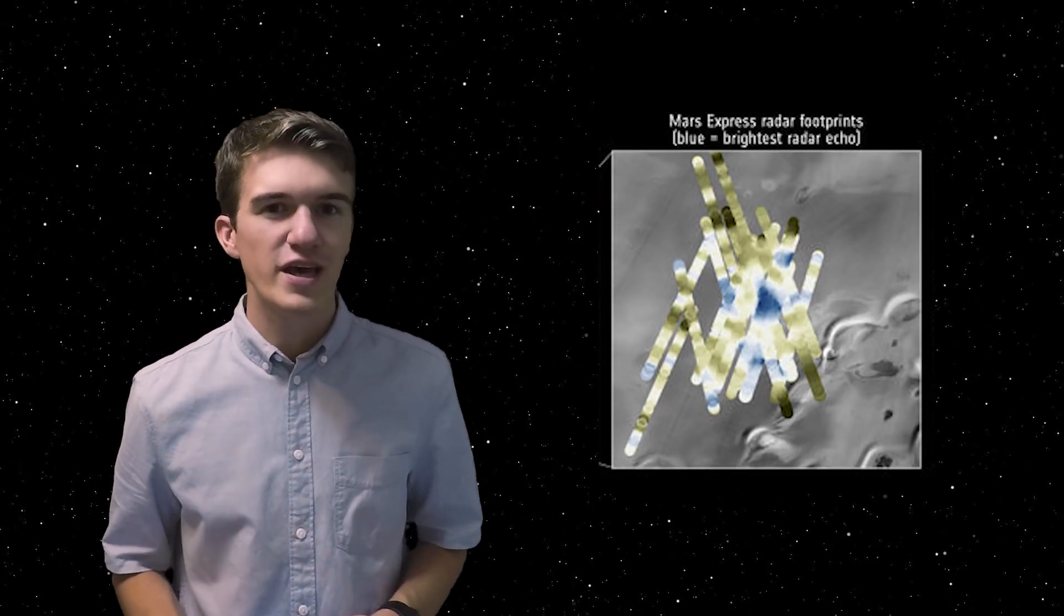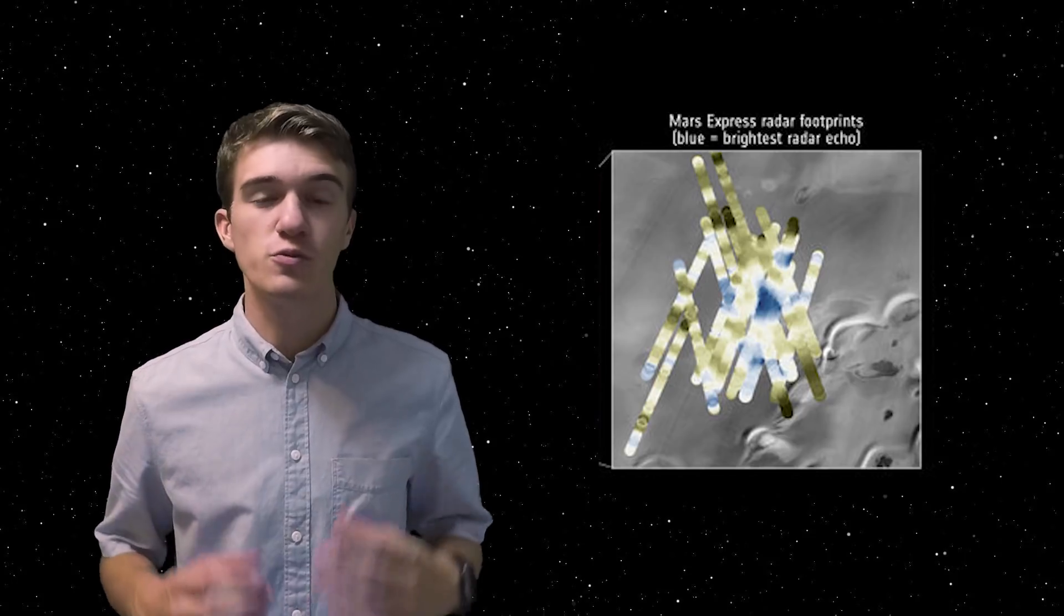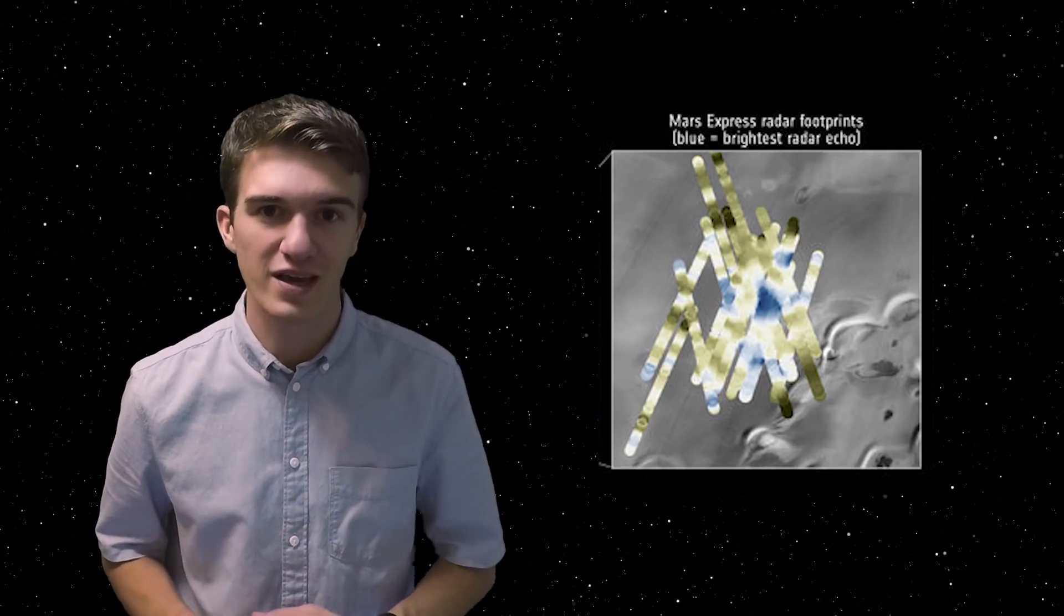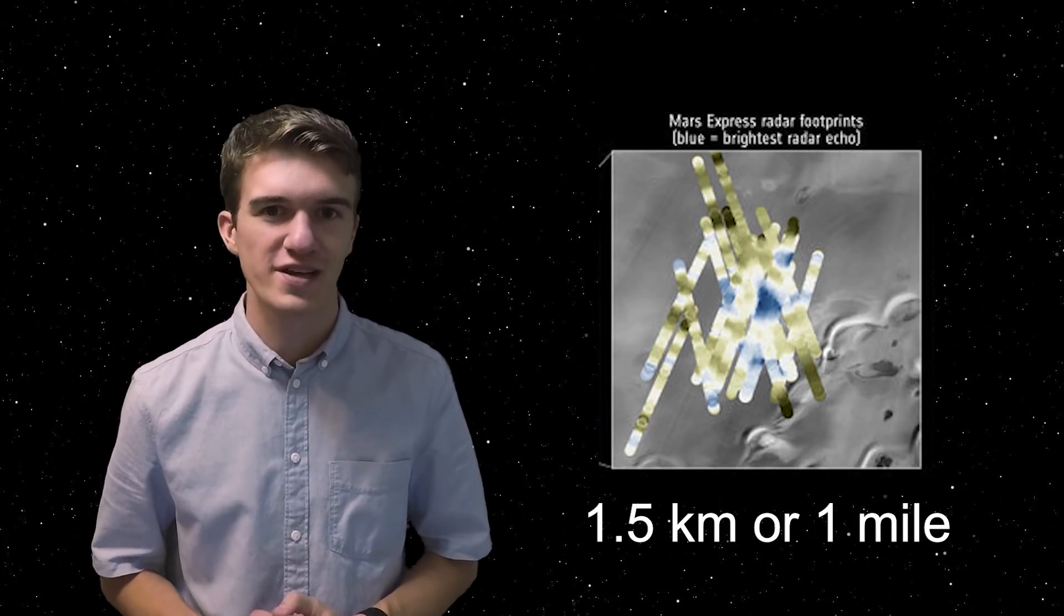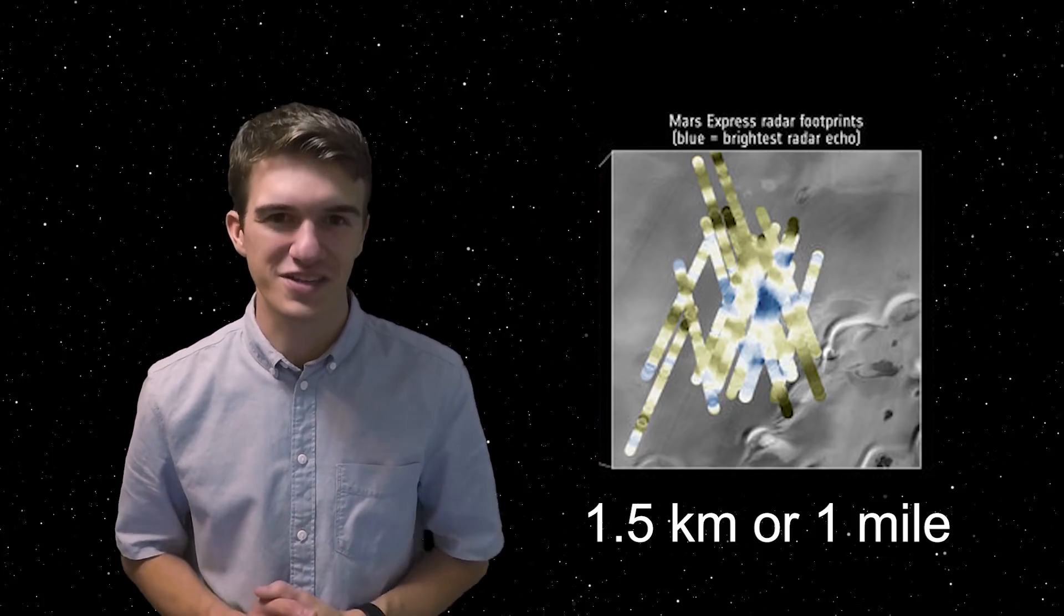This is just one image that was taken over a single orbit over that region. And by collecting anywhere around 25 to 30 of these images, they were able to see where exactly this bright spot is. And by overlaying that on the surface, you could see the dark bluish triangle in the center is where they predict the lake to actually be. And it turns out to be about one and a half kilometers below the surface. So it might be a little bit of a hassle to get there.